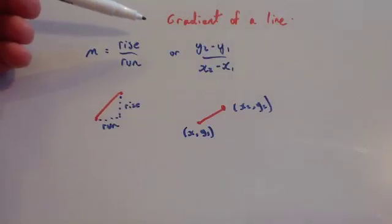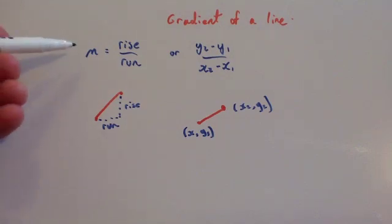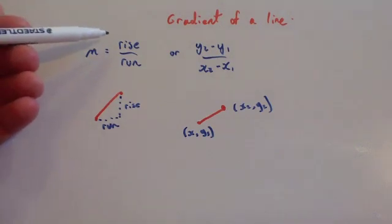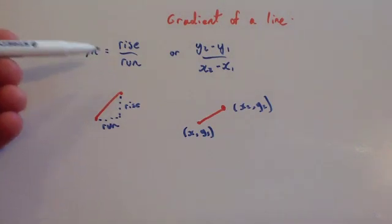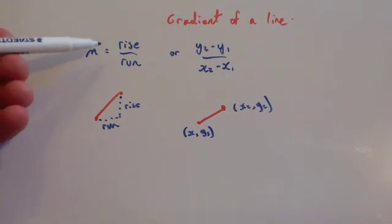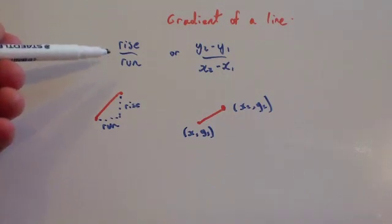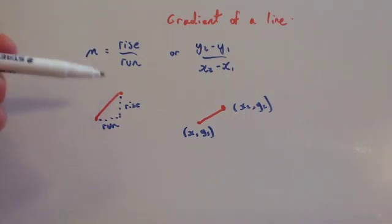In this video we're going to look at how to find the gradient of a line. The gradient of a line is a measure of how steep it is, and it's defined as rise over run. The letter we use for gradient is m, so m equals rise over run.